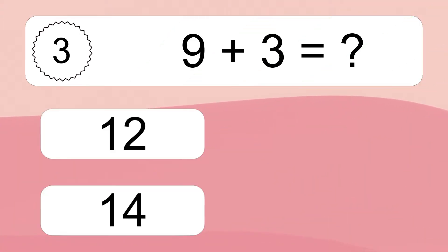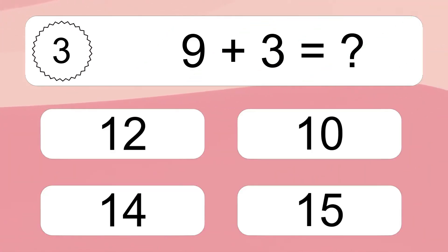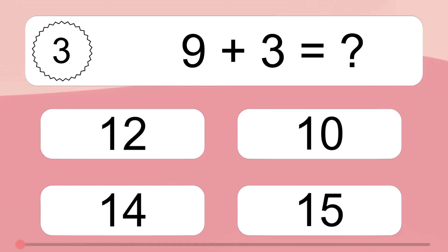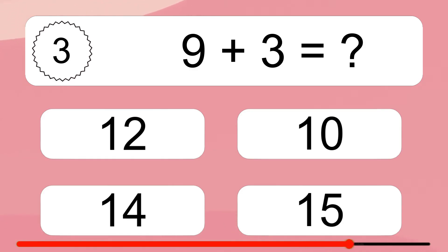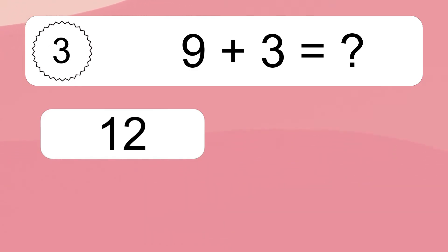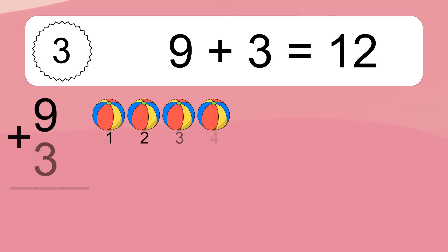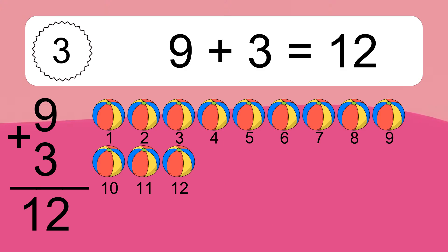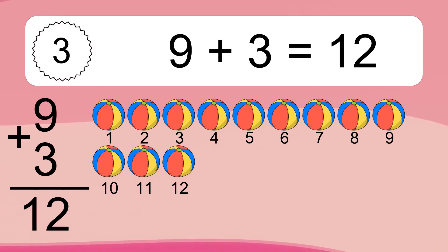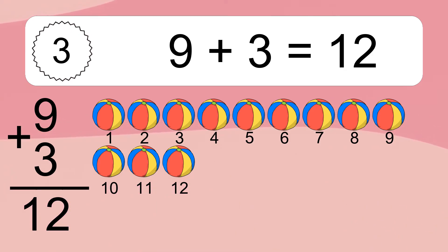9 plus 3 equals what? 9 plus 3 equals 12. Let's count it: 1, 2, 3, 4, 5, 6, 7, 8, 9, 10, 11, 12.